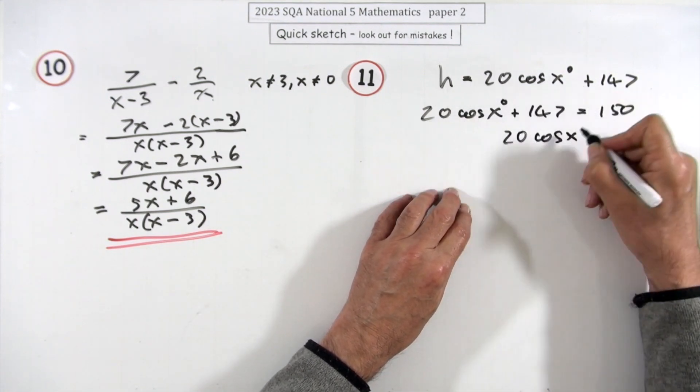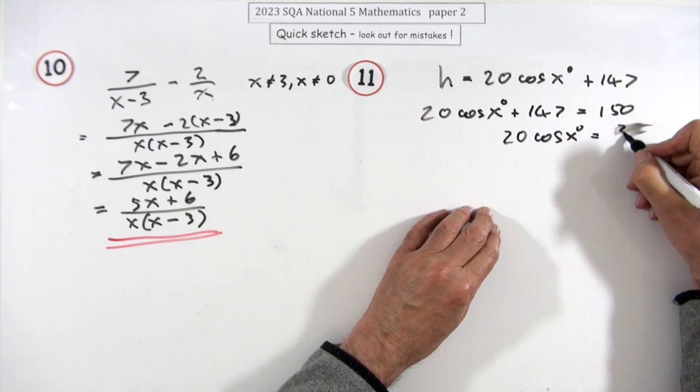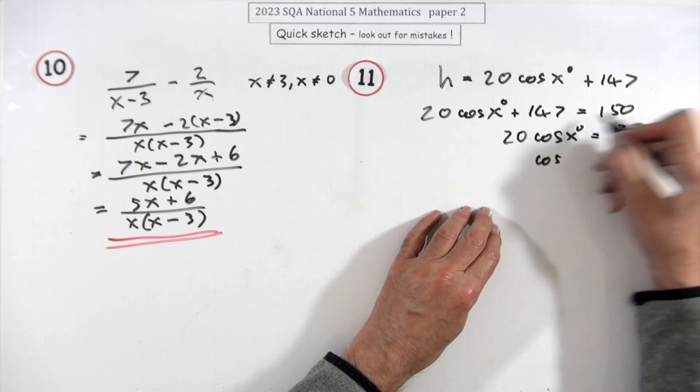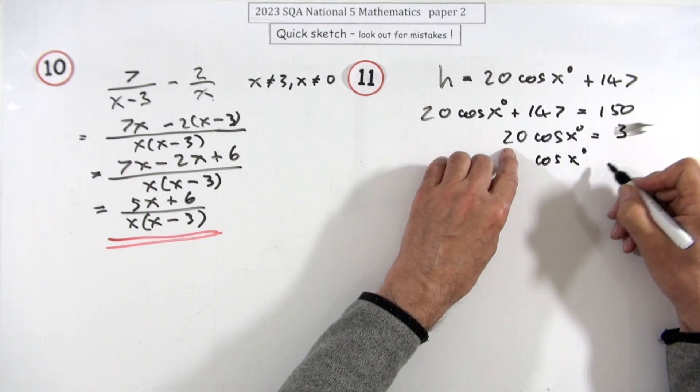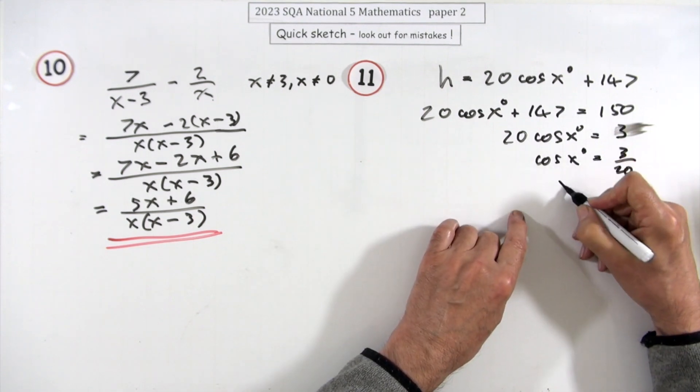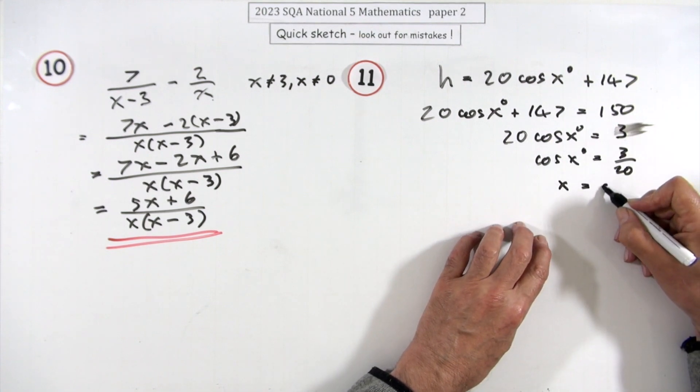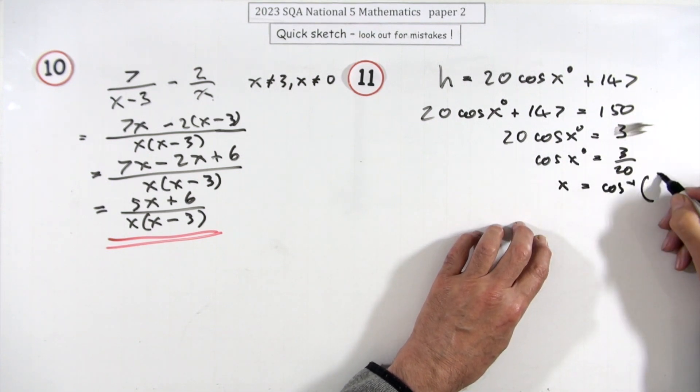Maybe I'll put it back in, feeling a bit guilty. So it's 150. Just take 147 across. Now divide by 20, so 3 upon 20. Now finally get rid of that cos. At this point I'll get rid of the degree sign, so that's going to be inverse cos of 3 upon 20.